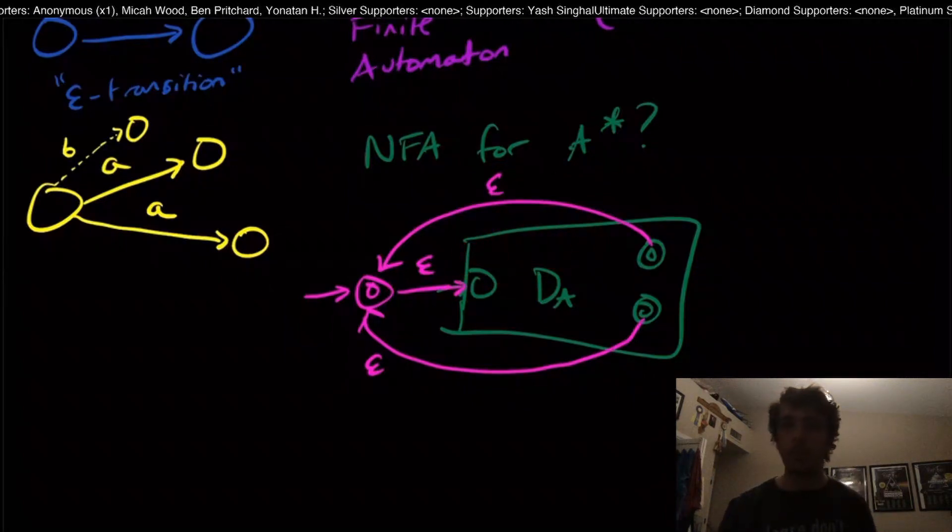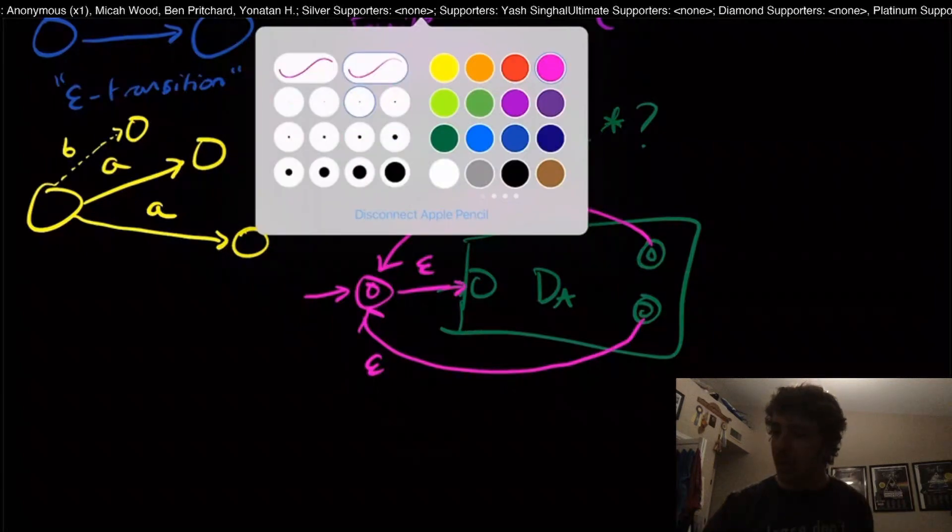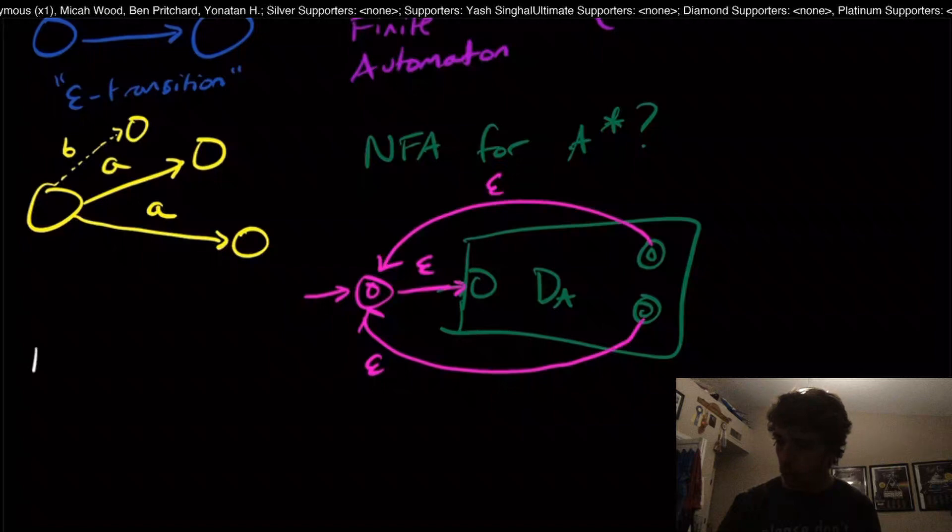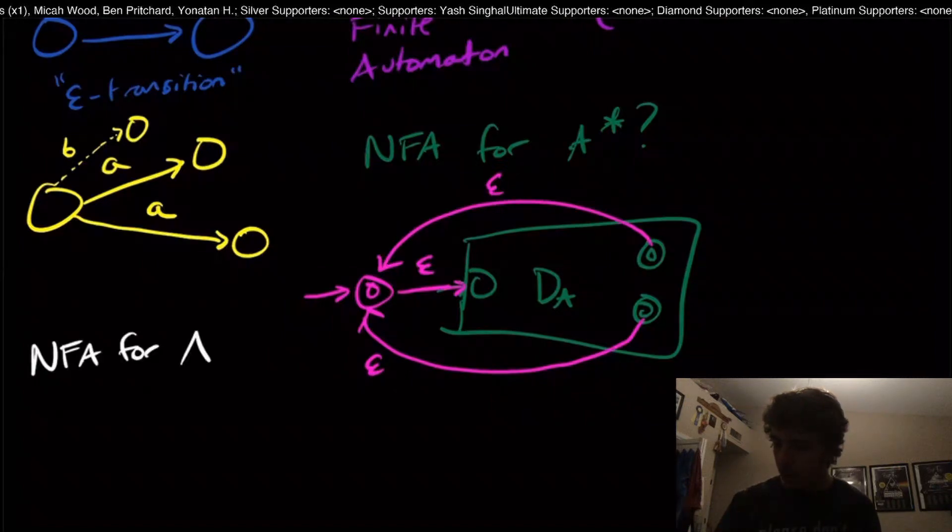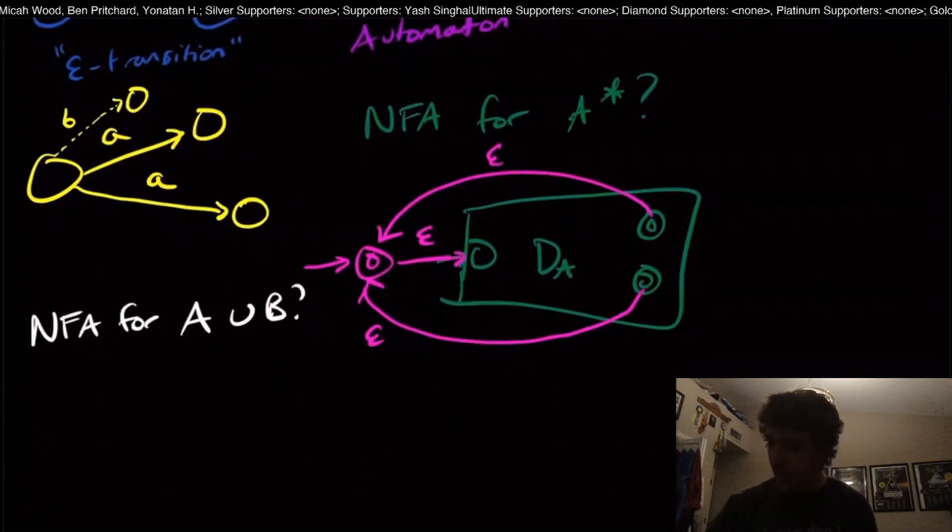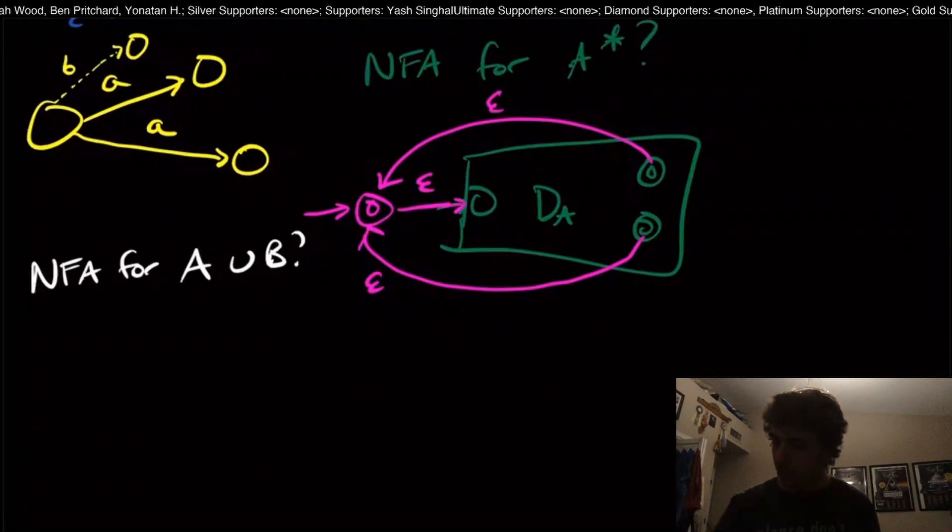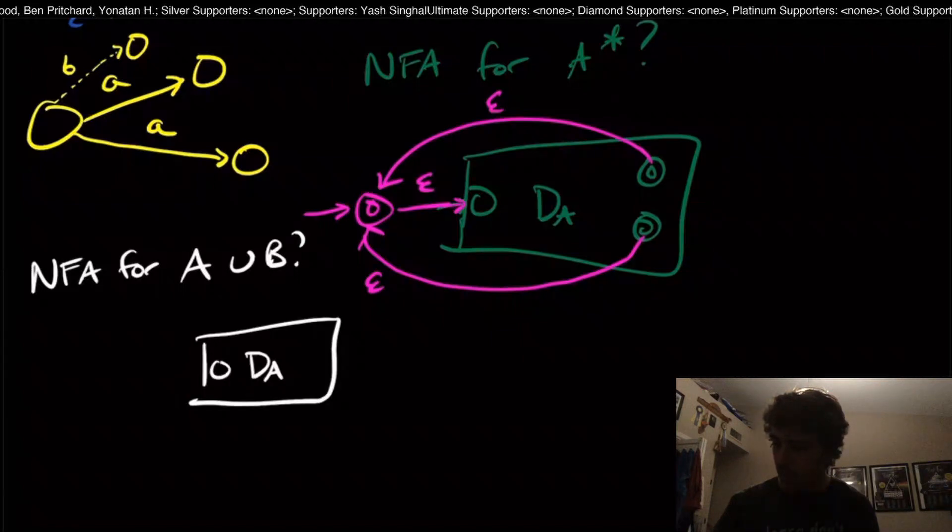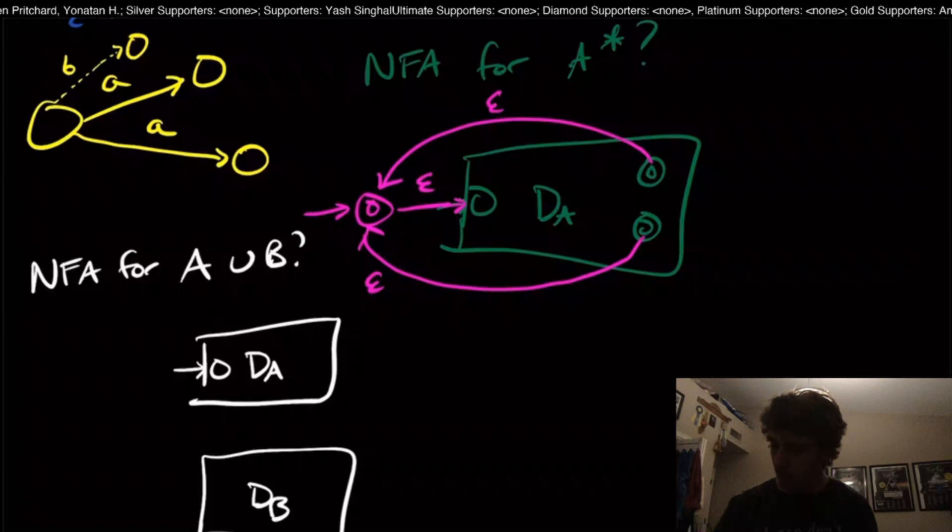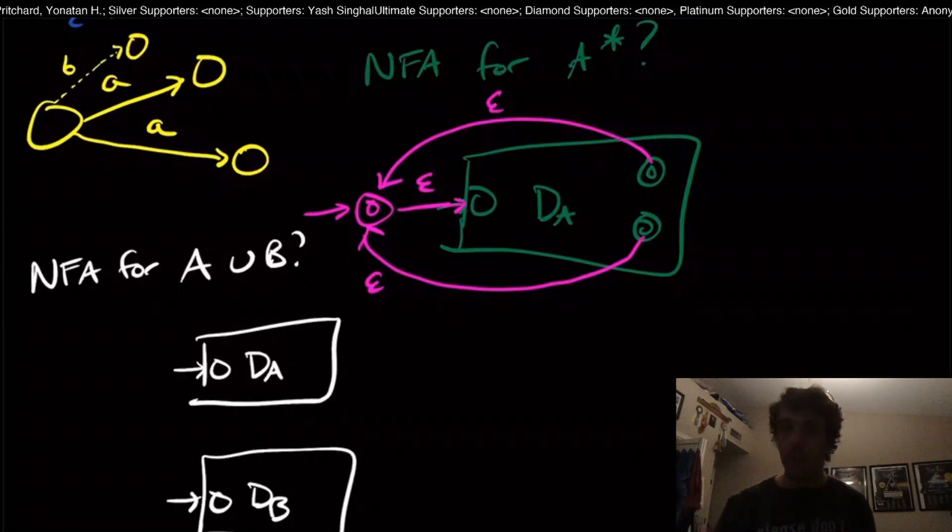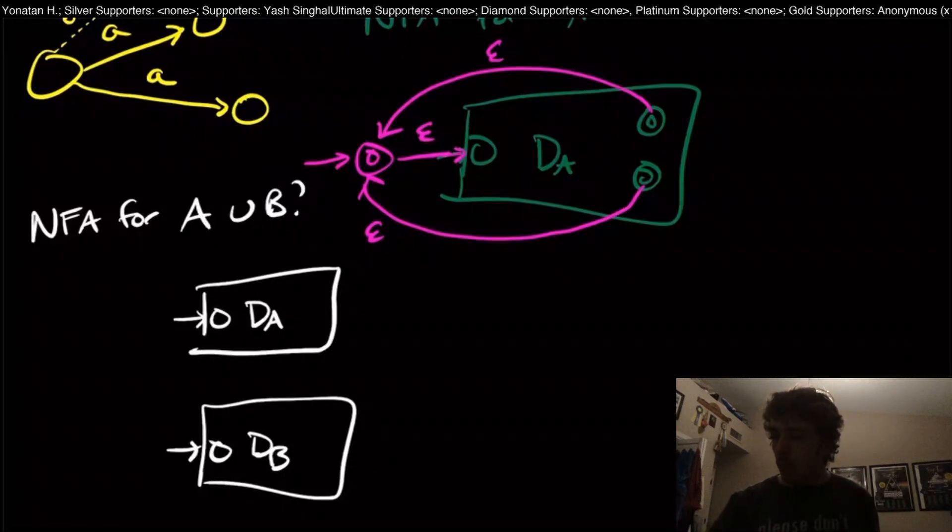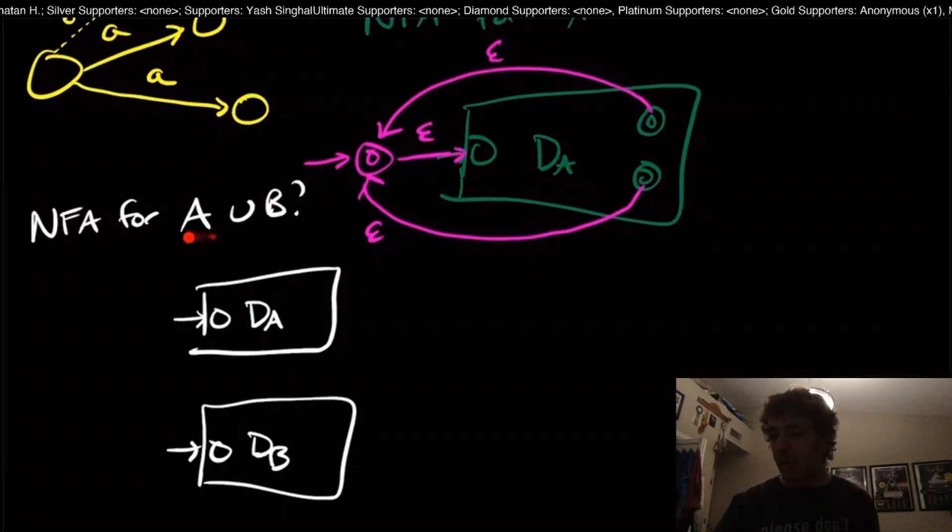We get something additionally. We can actually do unions really compactly. What about an NFA for A union B? Let's just have our two DFAs right here. We'll only need the start states for these.